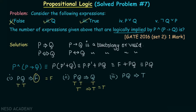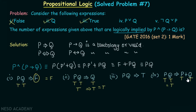Let's consider the fourth expression: does pq logically imply p or q? Taking p true and q true makes pq true. Then p or q gives true or true, which is true. True implies true is also true. Hence, p or q is also logically implied by p AND (p implies q).